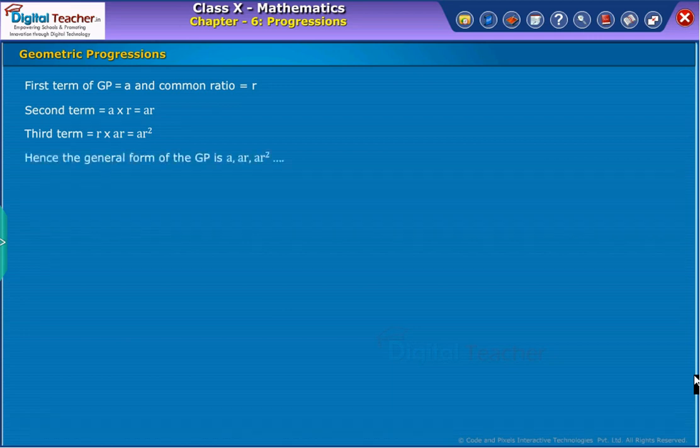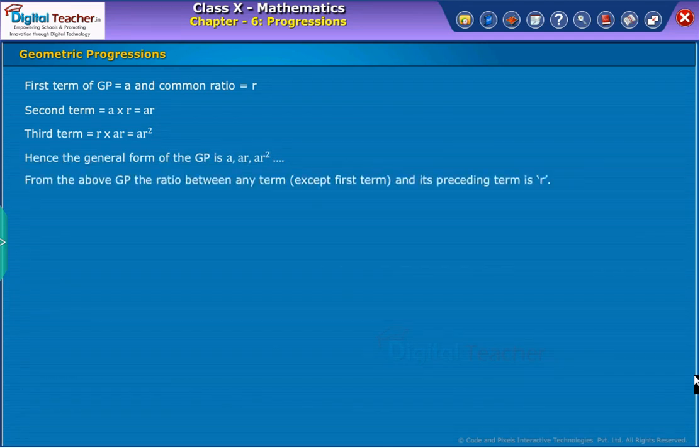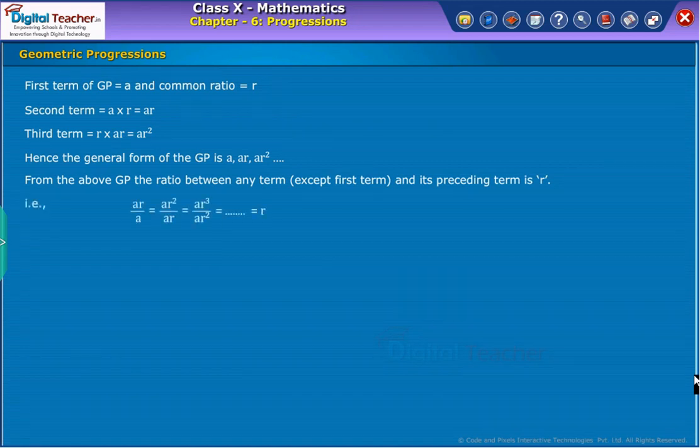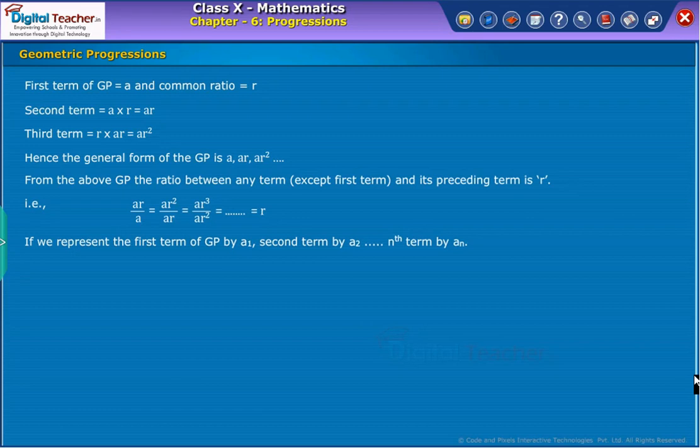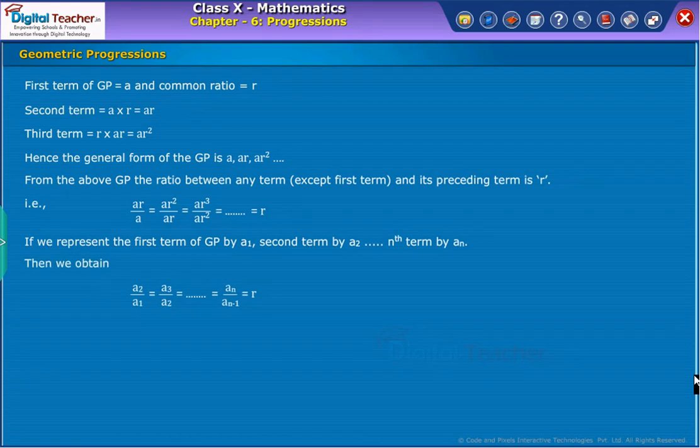Hence, the general form of the GP is as shown. From the above GP, the ratio between any term except first term and its preceding term is R. If we represent the first term of GP by A1, second term by A2, nth term by AN, then we obtain as shown.